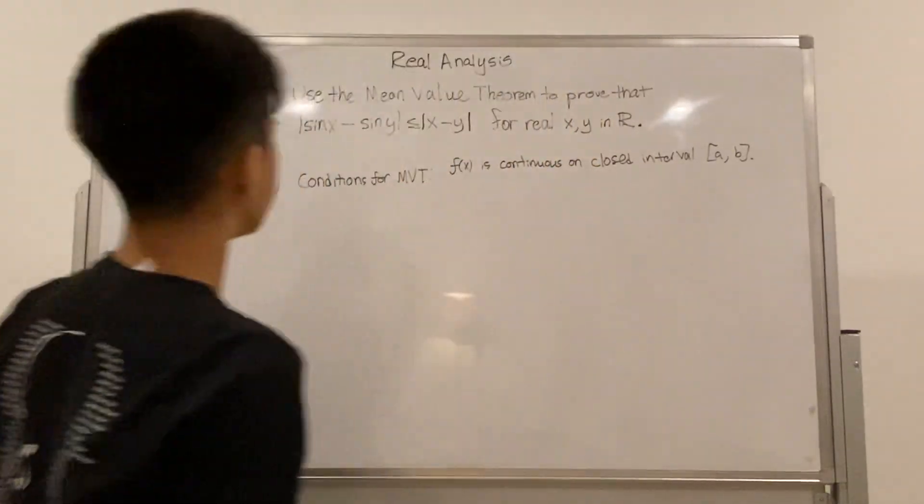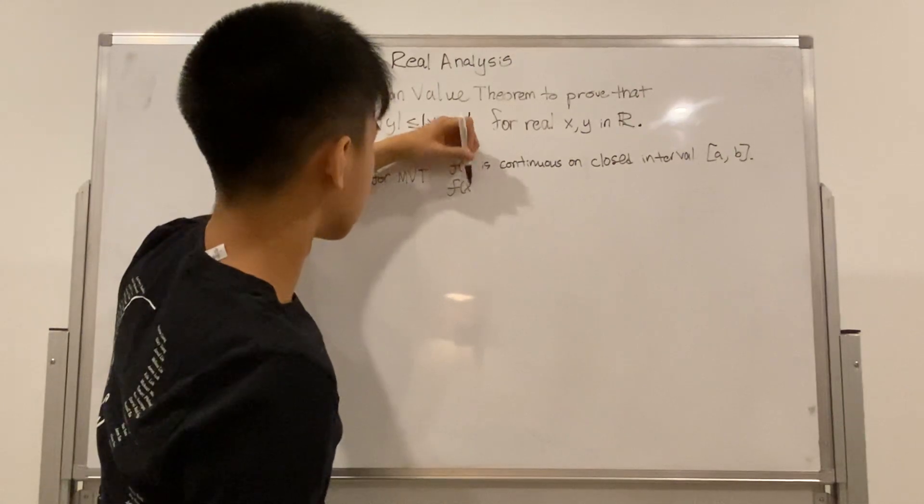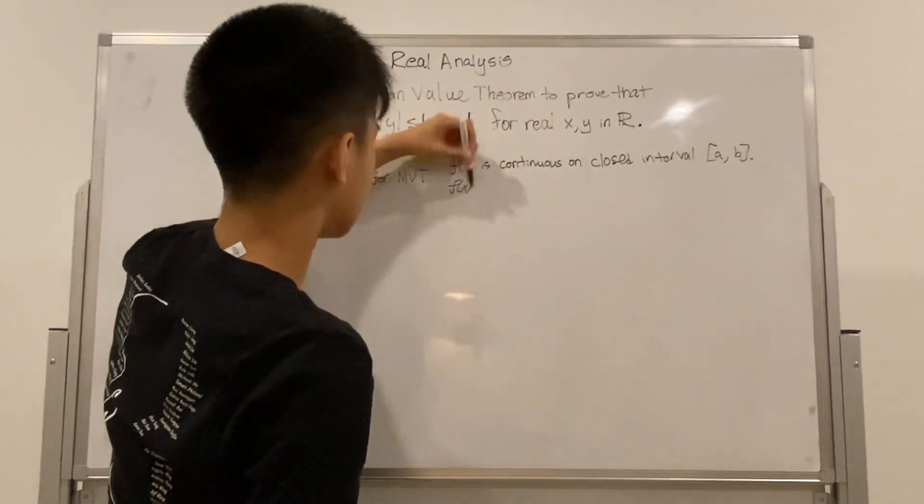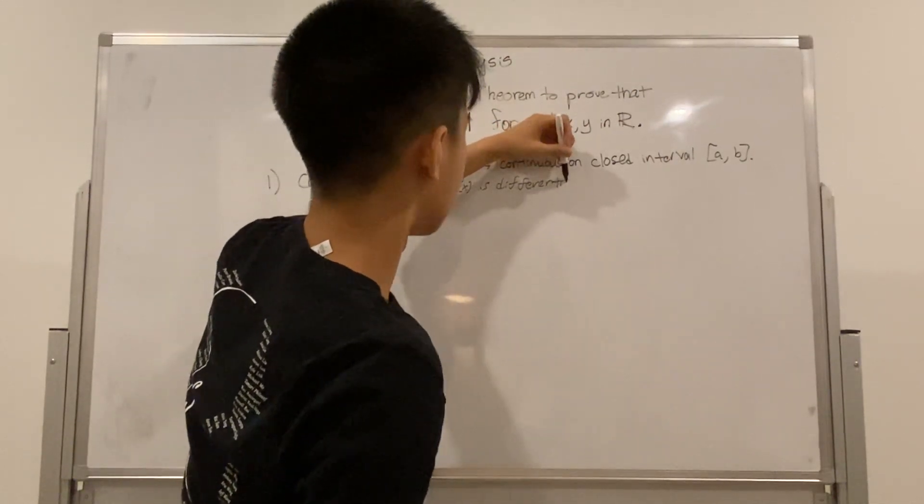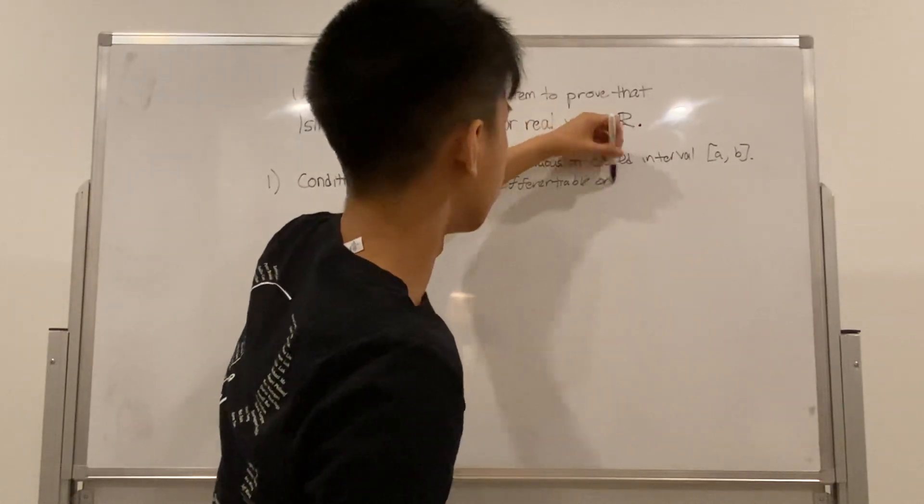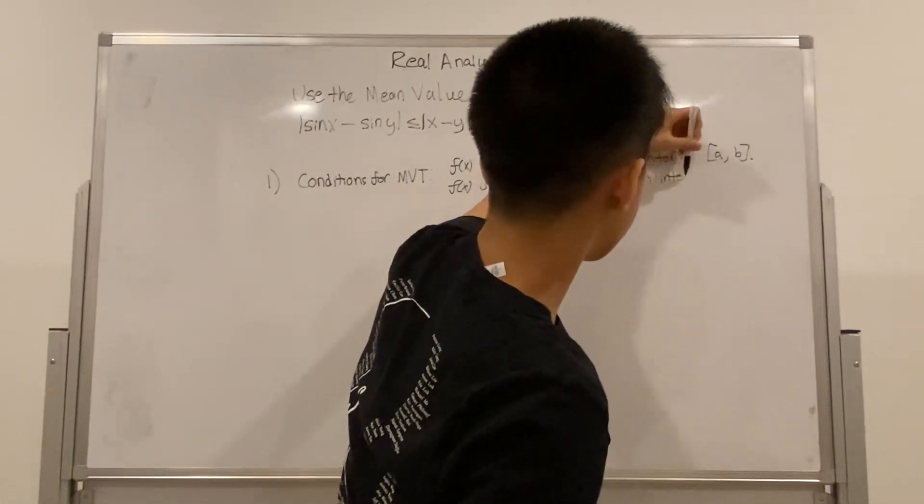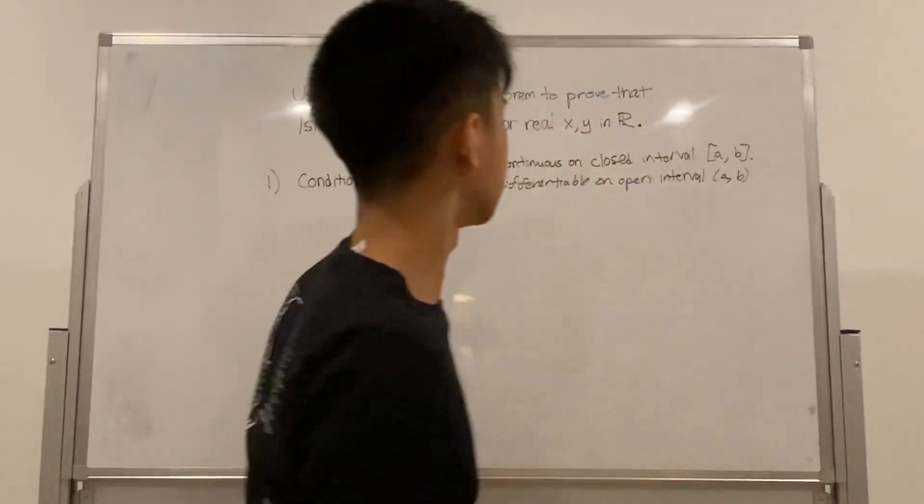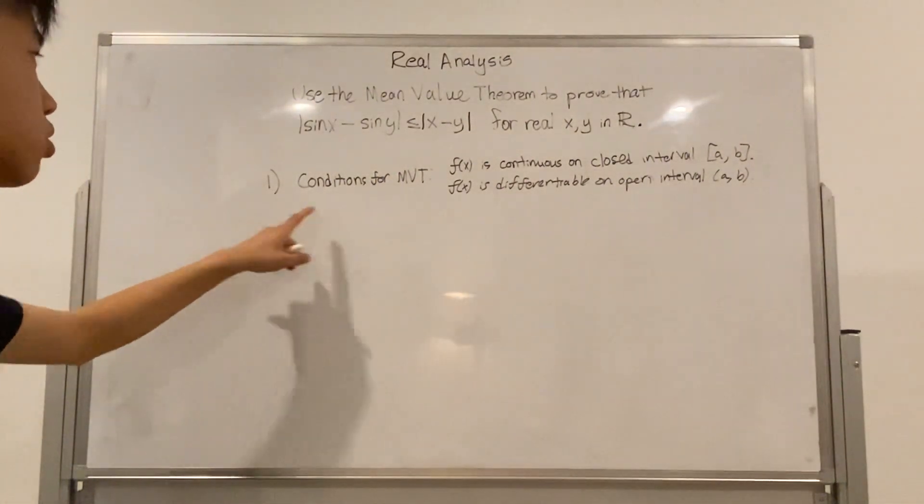And secondly, f of x is differentiable on open interval a to b. So we need to have those satisfied in order to be able to use the MVT at all.